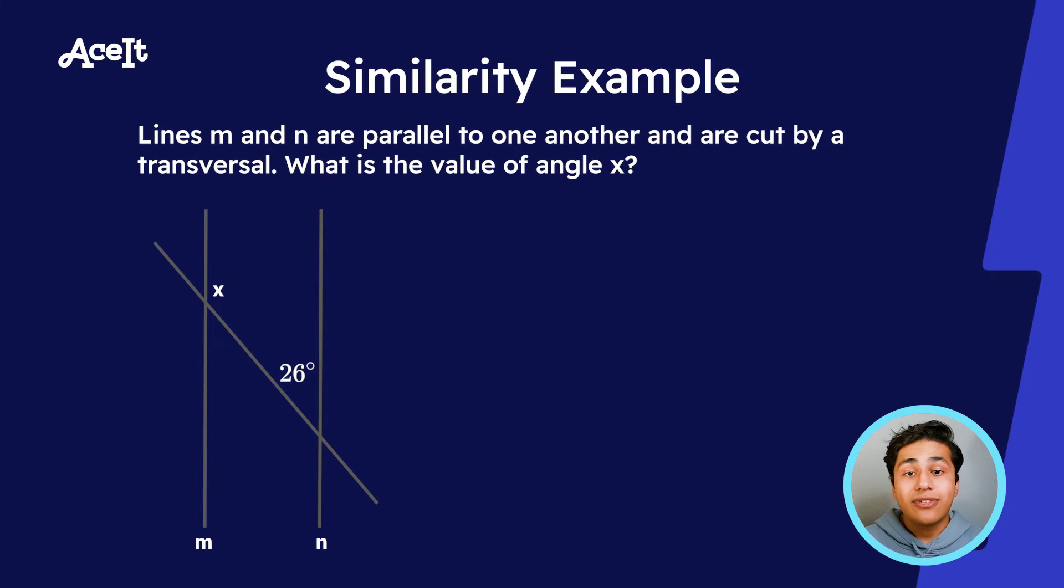We need to find the value of angle X. In order to find X, we are going to have to subtract 26 degrees from 180 degrees because we're given one of the angles to be 26.